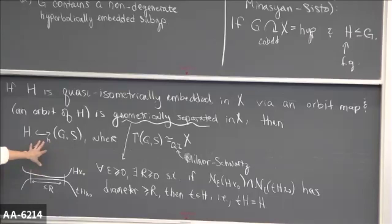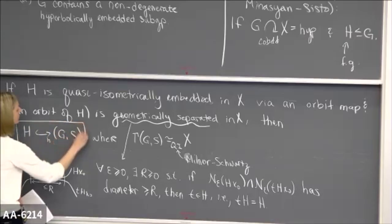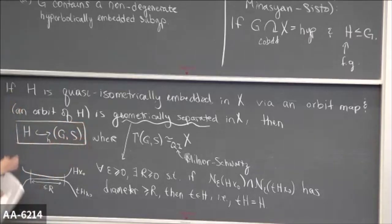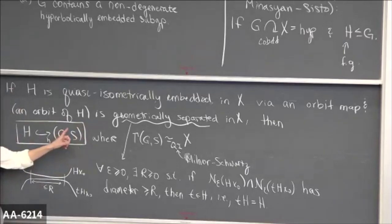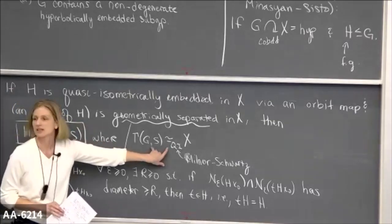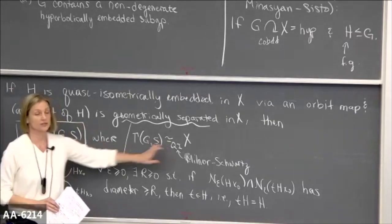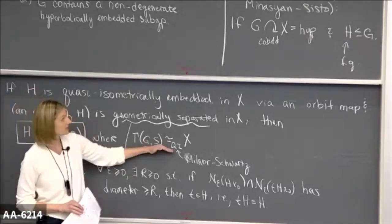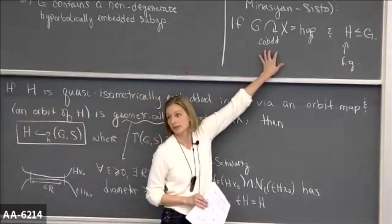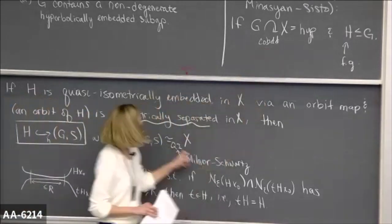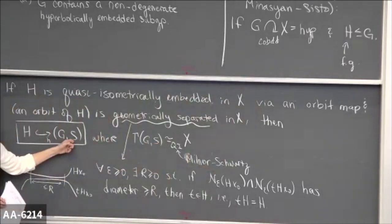Are there questions about the statement? The main part of the conclusion is that H hyperbolically embeds in G, but it hyperbolically embeds in G with respect to the particular relative generating set which gives this quasi-isometry. The fact that you have this quasi-isometry just comes from having a co-bounded action, but this S shows up here, which is the important part.